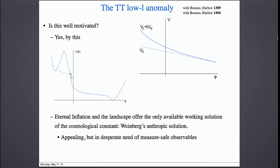We sit here and then we undergo a tunneling, and then clearly there is a steepening region before our inflation. This scenario is very appealing, also because it's the only solution to the cosmological constant so far. But this scenario is in desperate need of measure-safe observables.